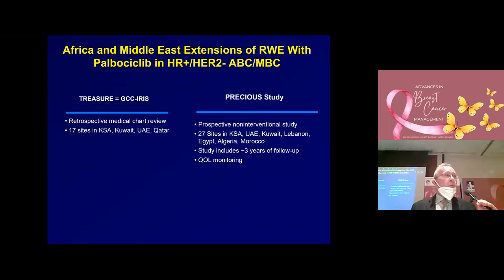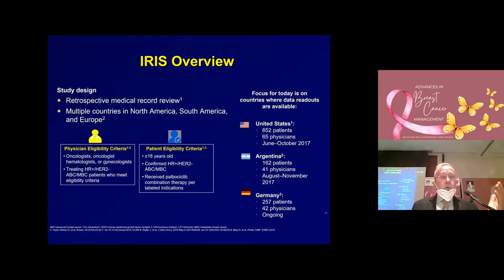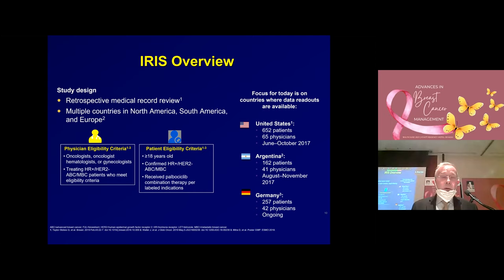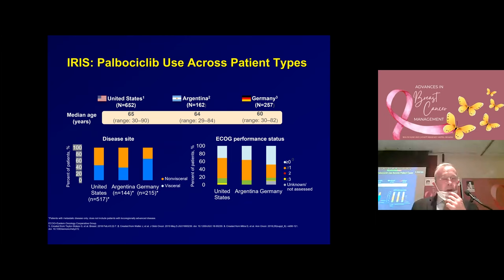In Africa and the Middle East there are very limited studies — only two actually, TREASURE and PRECIOUS. Maybe some of you are participating in these studies; we don't have results at this point. The IRIS study to start with: it's a retrospective medical record review across multiple countries, with oncologists, co-hematologists, or gynecologists treating breast cancer meeting the eligibility criteria — patients over 18 years old with confirmed luminal HR2-negative breast cancer receiving palbociclib in combination according to the label.